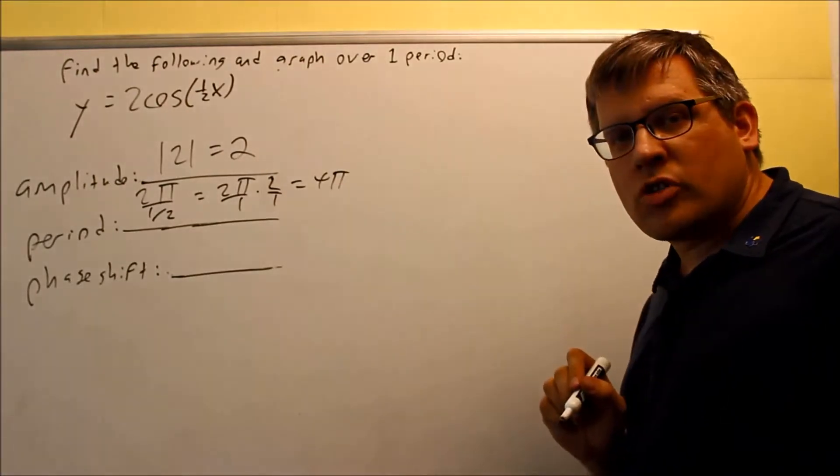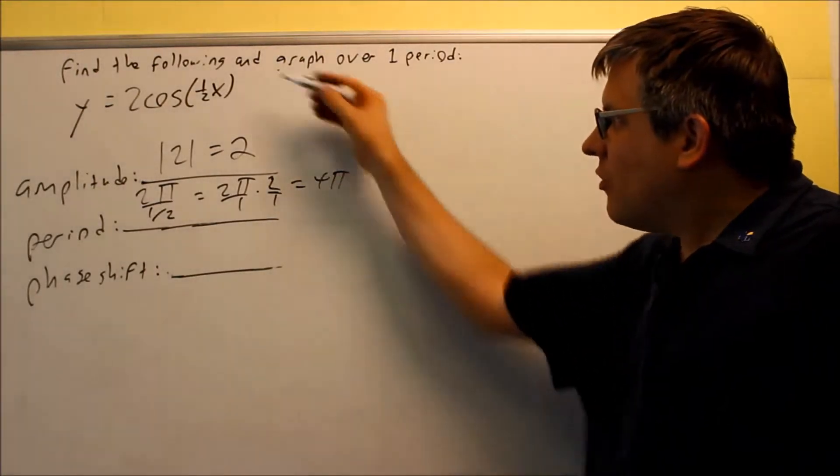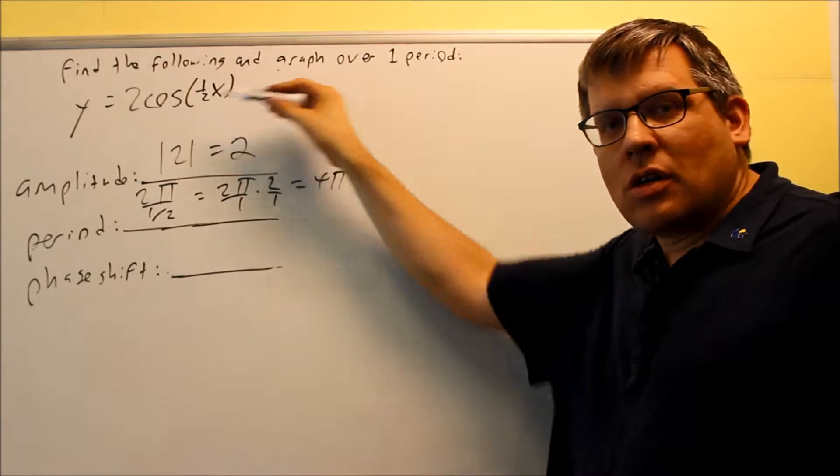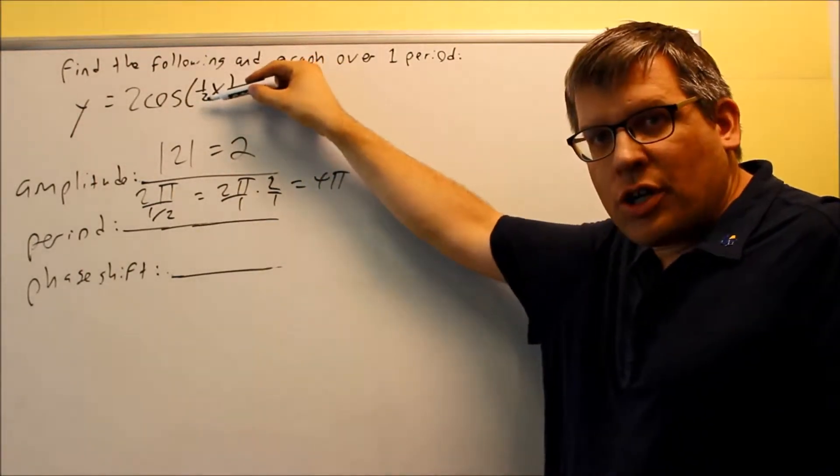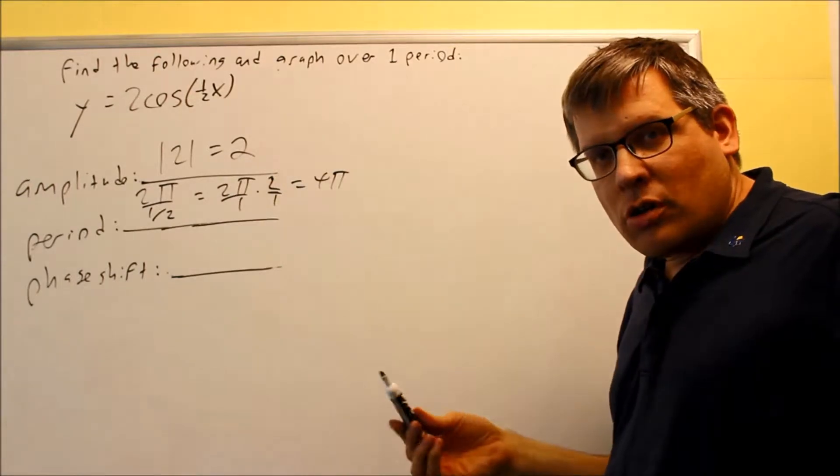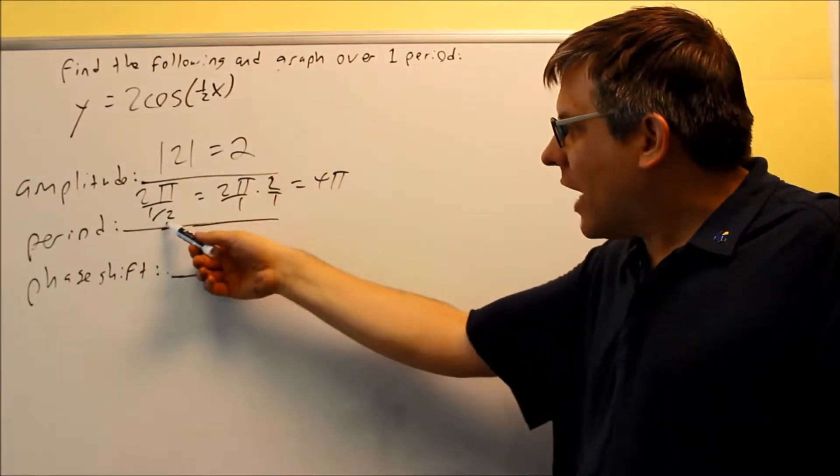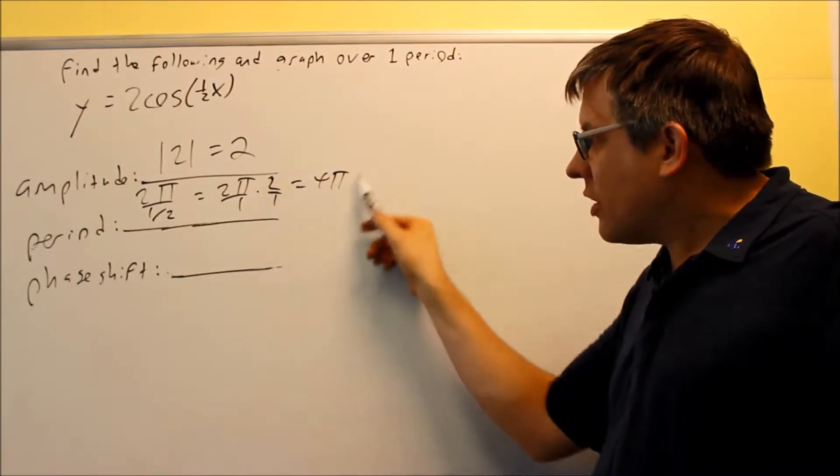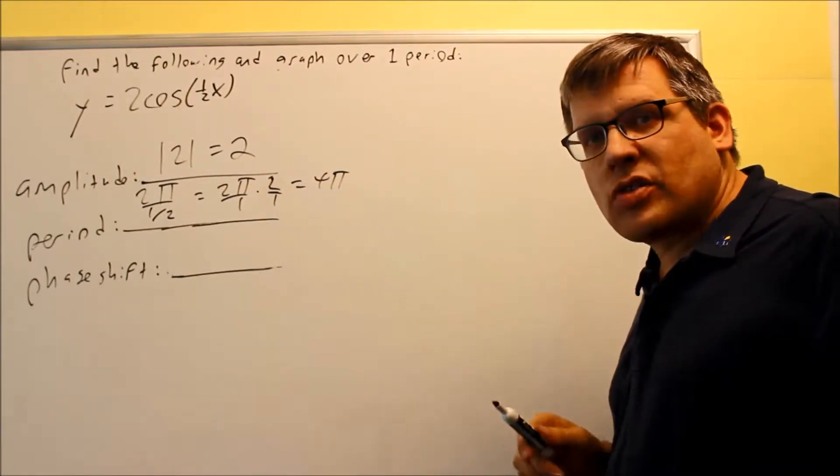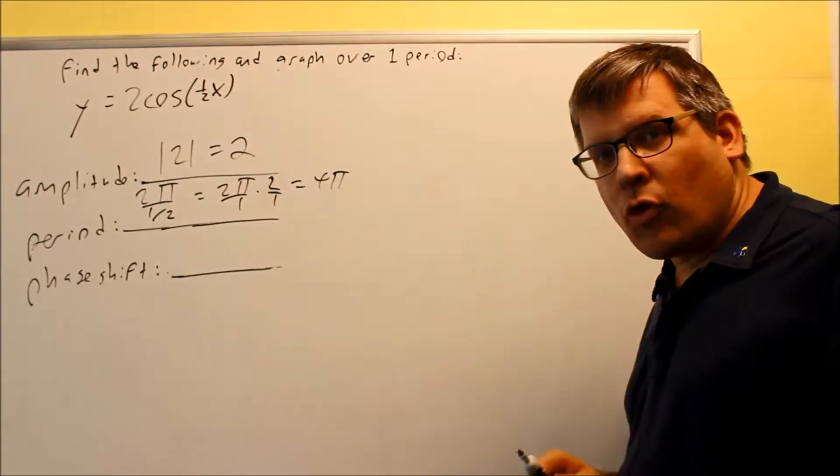So 4π, that's twice as long as it was before. What happens is, if you have a fraction in front of the x, that makes your period longer. If you have a regular number like a 2 or a 3, it's going to make your period shorter. In this case, because we're dividing by 1 half, when we flip the fraction, you're actually multiplying by 2, which means that makes the period twice as long as it was before. So now it's going to be 4π.